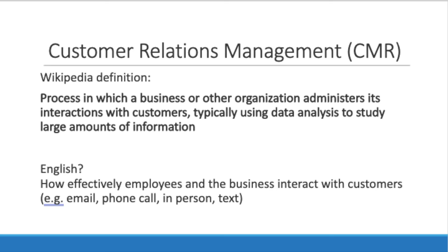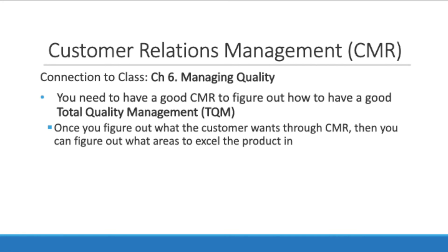Customer relationship management didn't have an actual definition within the article, so a Wikipedia definition was used: a process in which a business administers its interactions with customers, typically using data analysis to study large amounts of information. Simply put, it's how effectively your employees and the business interact with customers — through email, phone calls, in-person meetings, surveys, text messages, etc. Connecting this to Chapter 6, managing quality: you need good customer relations management to achieve good total quality management. Once you figure out what the customer wants through customer relations, you can figure out what other areas to excel in. Without good customer relations management, you could raise your total quality management overall, but you could raise it even further by improving just this area.